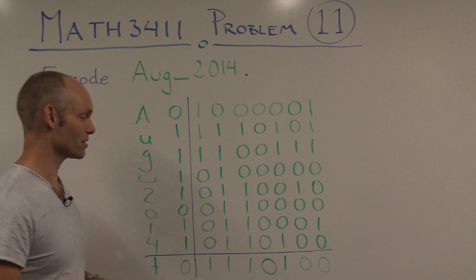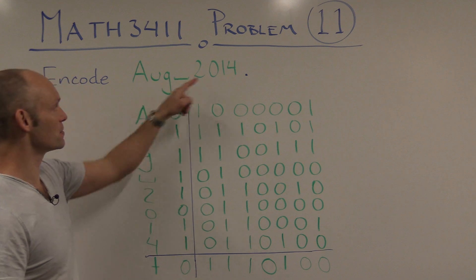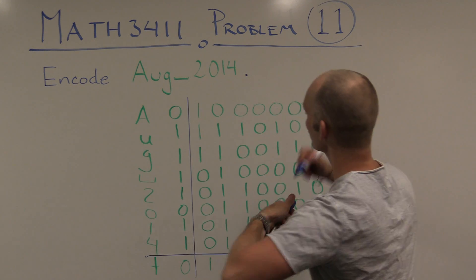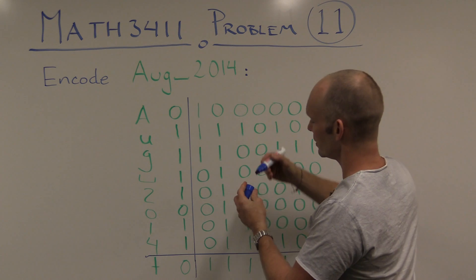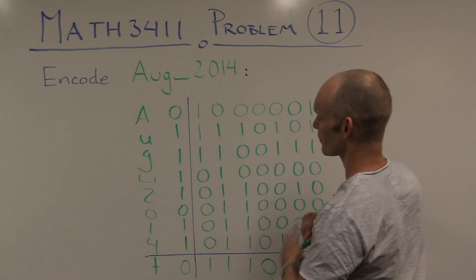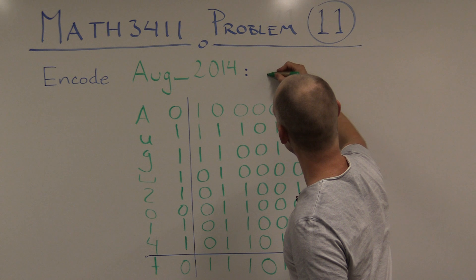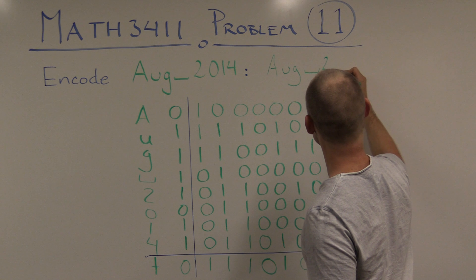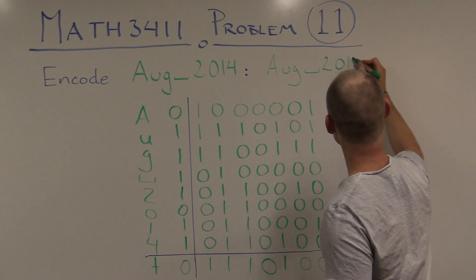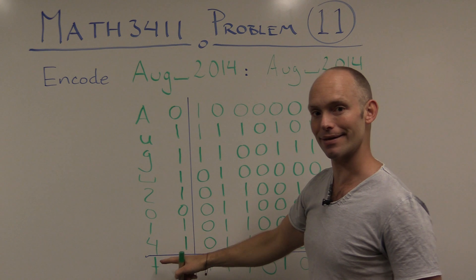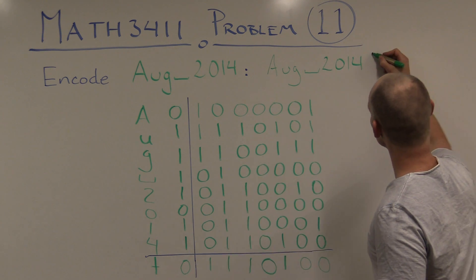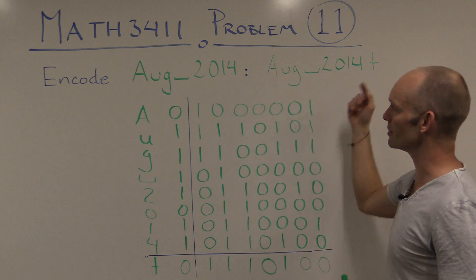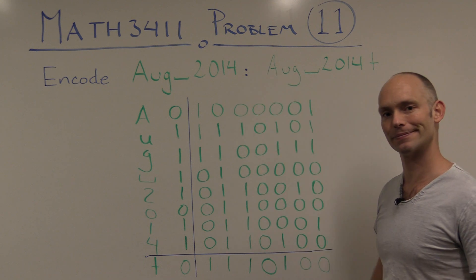So, we've encoded this message. If we write the encoded version of it, it's the message itself: AUG space 2014 plus the T. So that's our check character there. And we are done. There's the encoded version. Thank you very much.